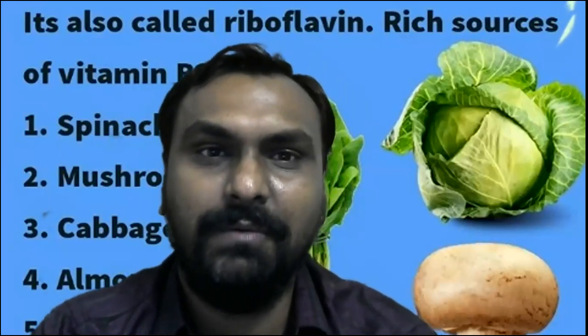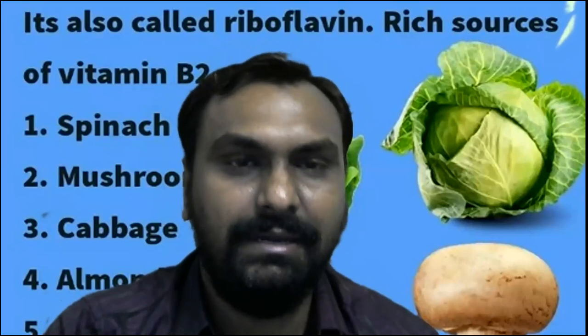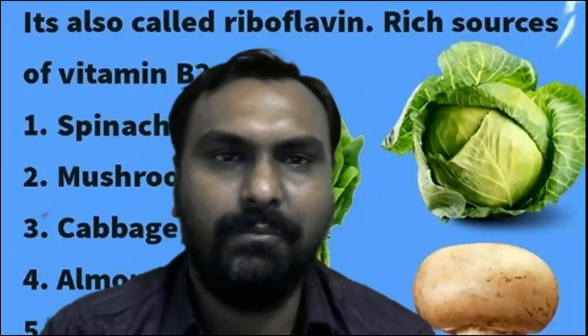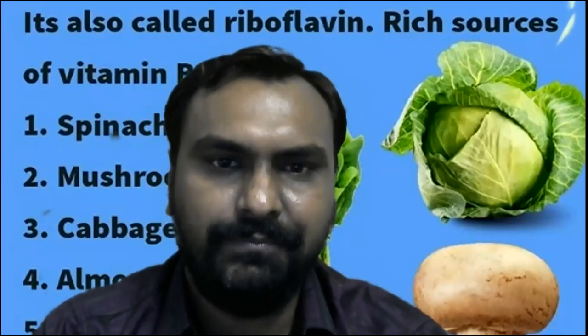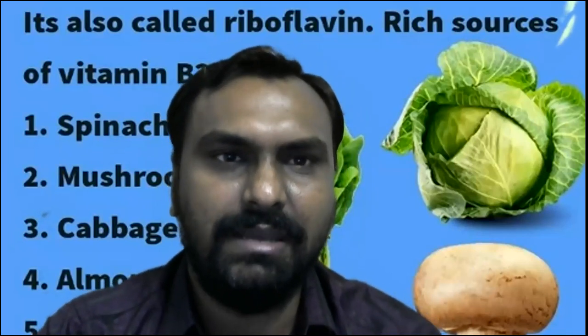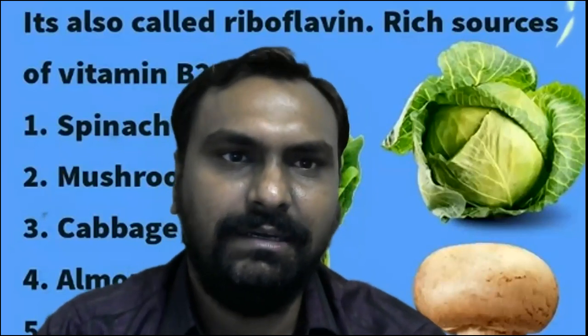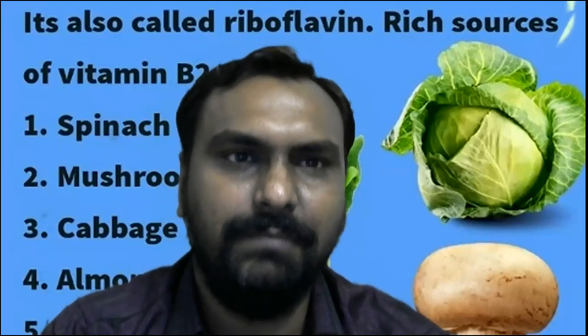Vitamin B2 is riboflavin. The active forms of riboflavin vitamin B2 are FMN and FAD, flavin mononucleotide and flavin adenine dinucleotide. We will see about riboflavin in detail, its deficiencies, sources, and functions.